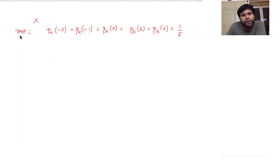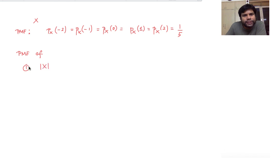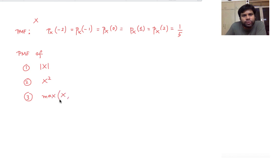Now we want to figure out the PMF of the following random variables. We want to find the PMF of: first, the absolute value of X — this is just a transformation of X — then the PMF of X squared, and also the PMF of max(X, 0). Let's do that.